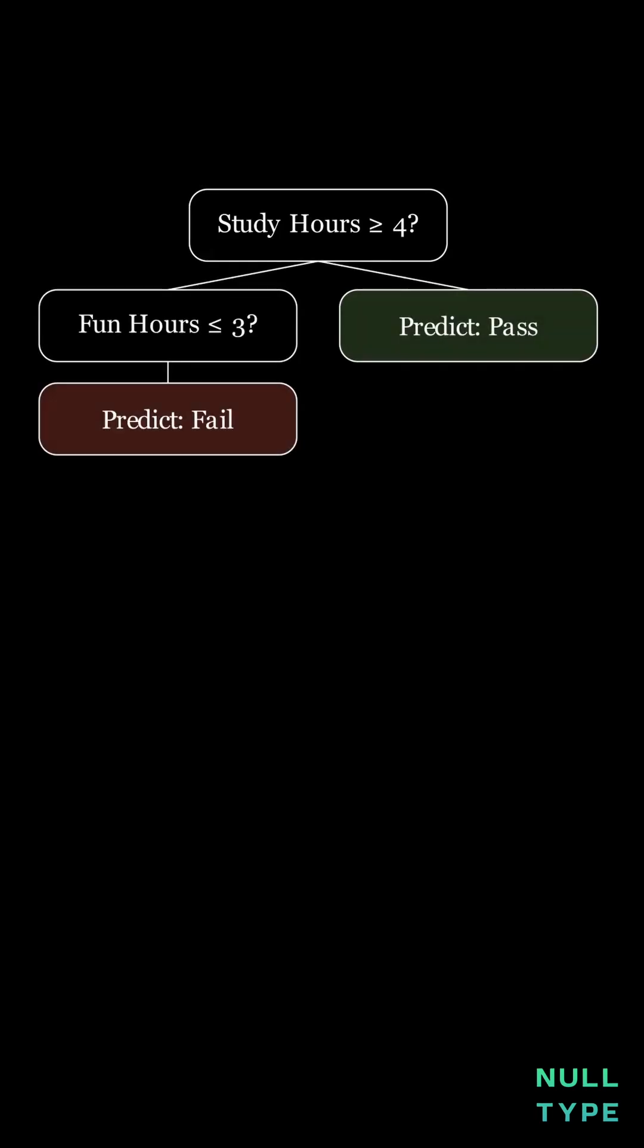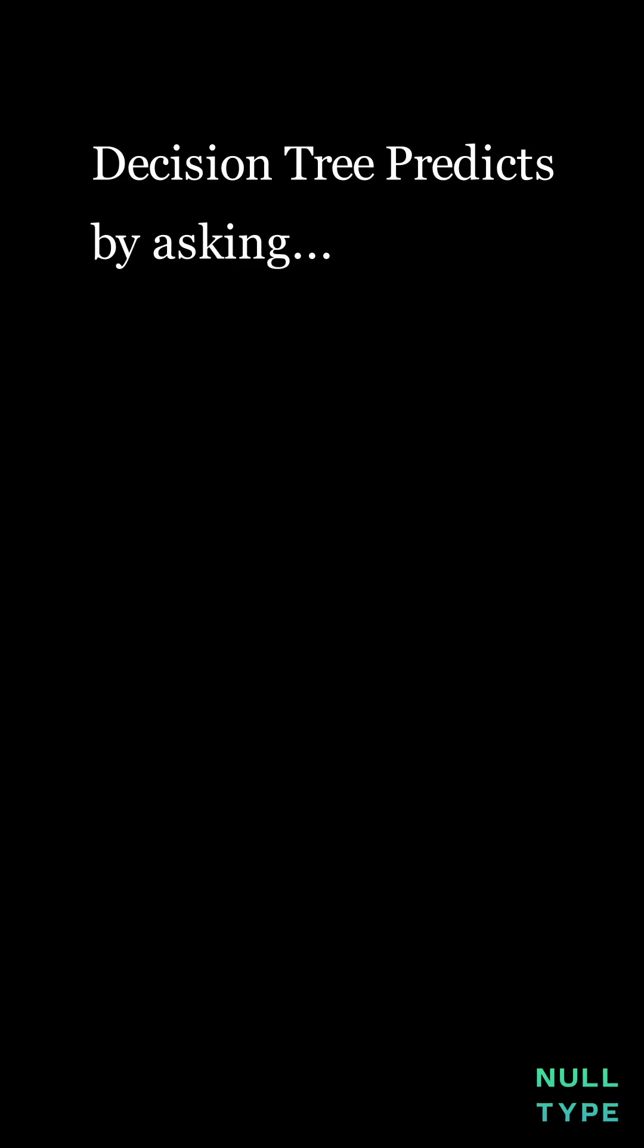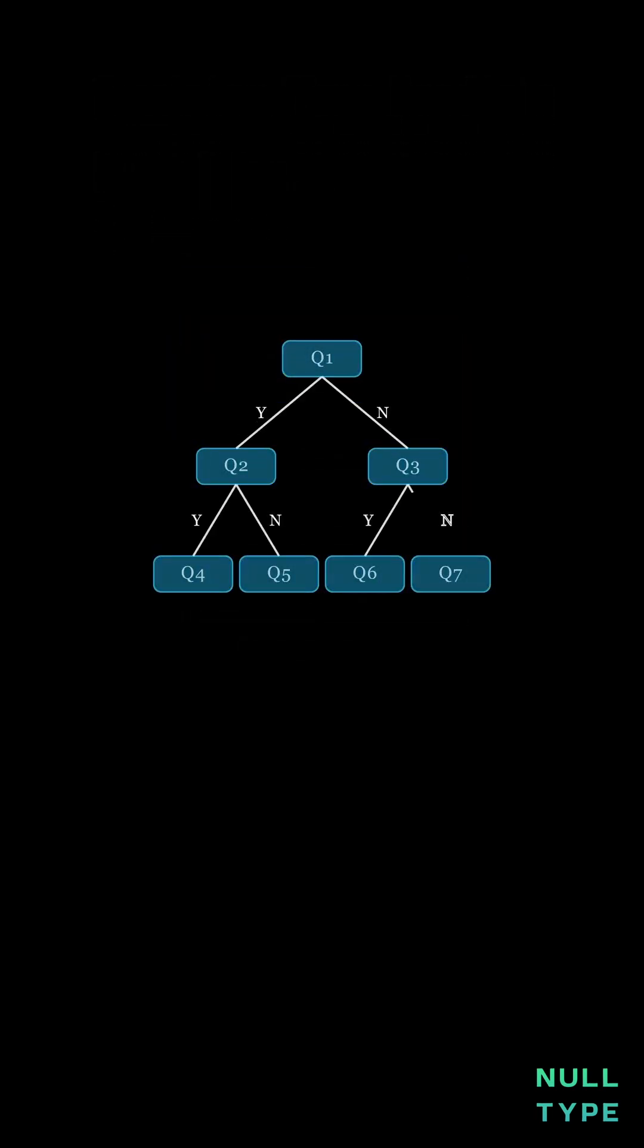Decision trees. Let's understand them using a simple student example. A decision tree predicts by asking a series of questions. It keeps questions as nodes, answers as branches, and predictions as leaves.